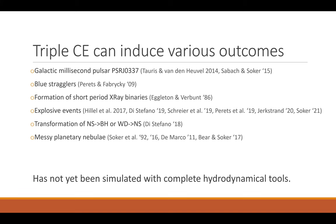Back to triples. We can find many previous works suggesting that a large variety of observed systems are results of common envelope evolution in triple systems. But no one has previously simulated this scenario in a full hydrodynamical simulation, due to computational difficulties and because we are far from understanding even the simpler case of binary common envelope evolution. But it is still very important to get a clue of the general effect of this phase on the evolution of the system, the differences from the binary case, and to predict possible outcomes.